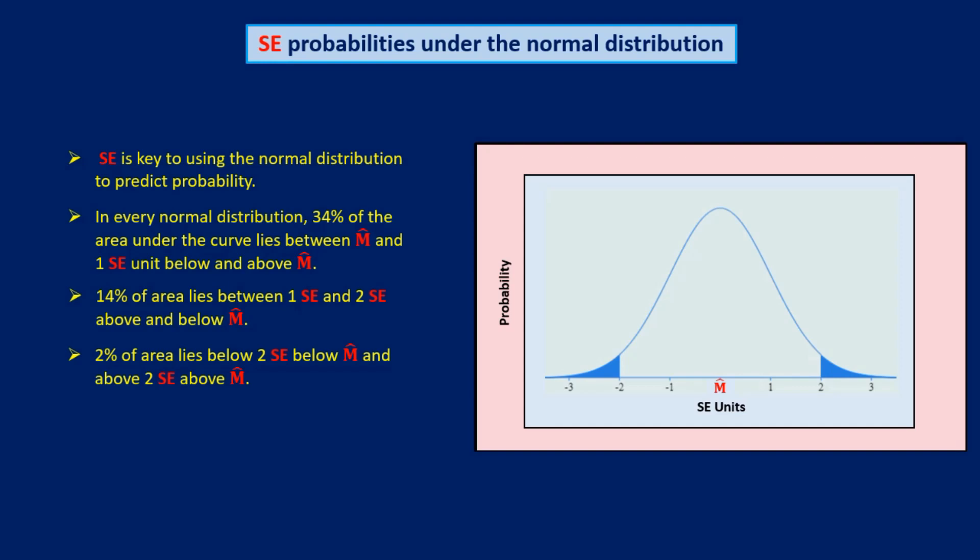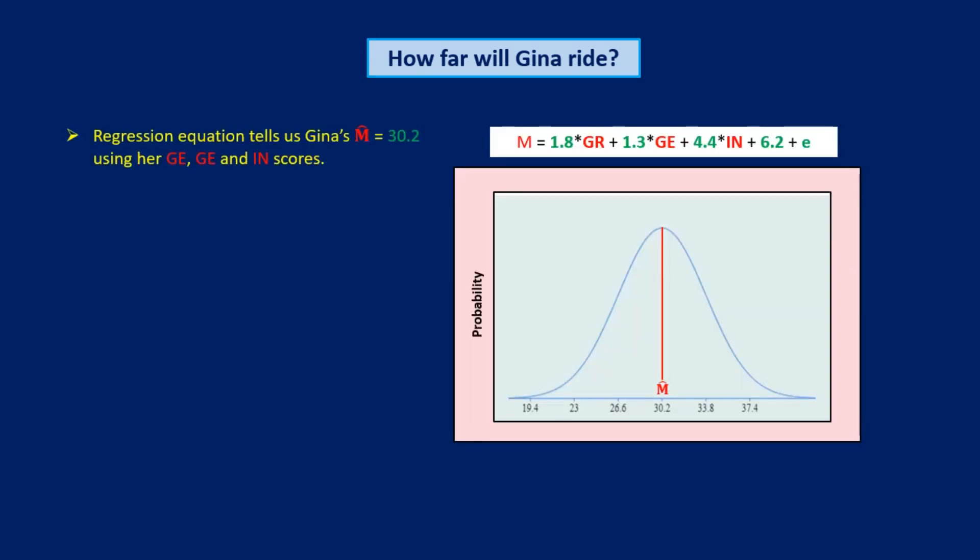We can now build the probability distribution for Gina's M next summer and use it to calculate the probability that she will ride more than 35 miles. Using Gina's GR, GE, and IN scores in the regression equation, we find that her M-hat is 30.2. Now, to find Gina's SE, remember that Linus' SE for last summer's 30 riders was 12% of M-hat for those riders. This percentage applies for any rider whose M-hat we calculate using the regression equation. Gina's M-hat is 30.2, and 12% of that is 3.6. So that's Gina's SE.